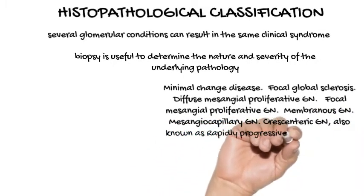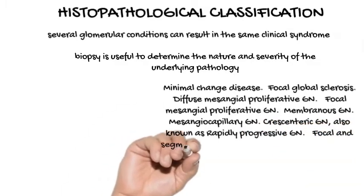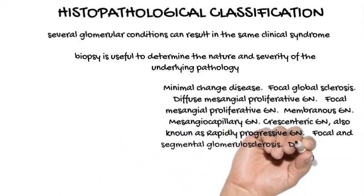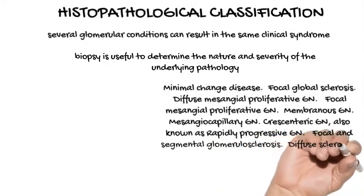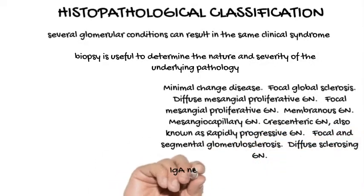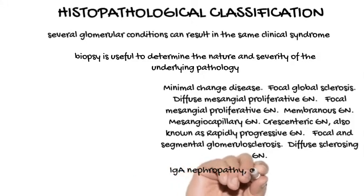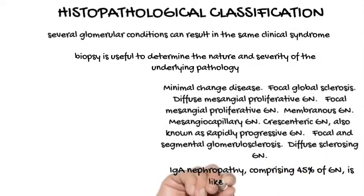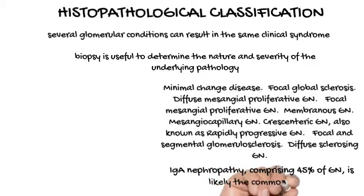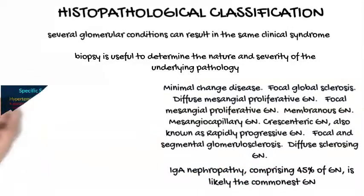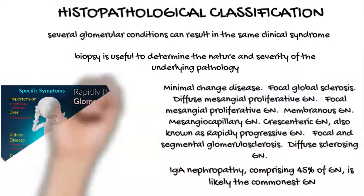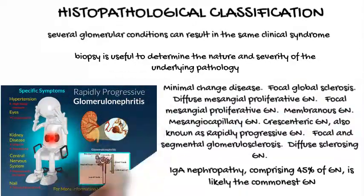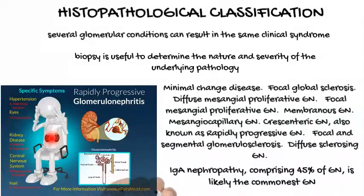IgA nephropathy, comprising 45% of GN, is likely the commonest GN. Of note is that asymptomatic hematuria and proteinuria is the commonest mode of presentation of this condition. This would suggest that careful screening for glomerular disease and its early identification can lead to prompt and appropriate management. Strategies should be directed at managing the specific conditions so that their progression to end-stage renal failure can be ameliorated.